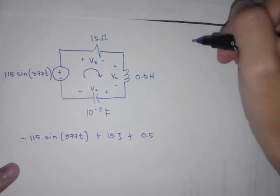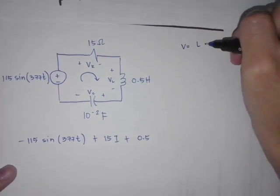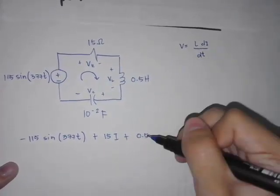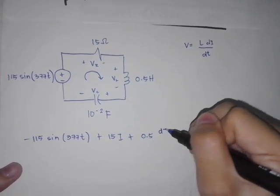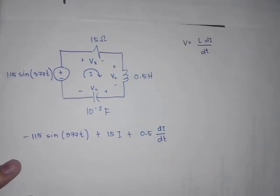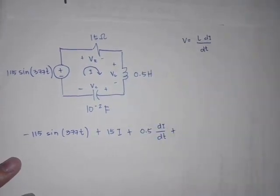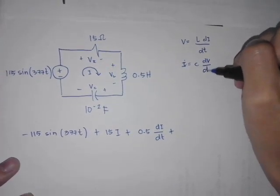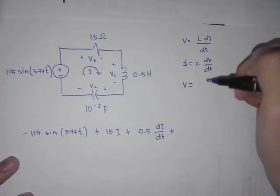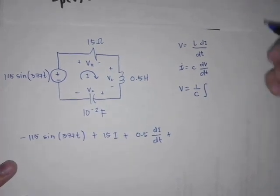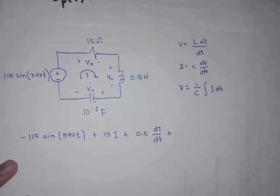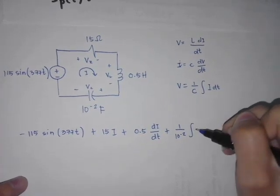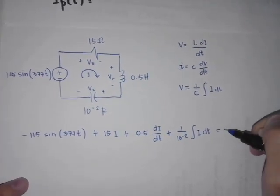For the inductor, V is equal to L times dI/dt. So we have 0.5 times dI/dt. For the capacitor, the voltage is equal to 1 over the capacitance times the integral of I dt. So we have 1 over C, which is 10 to the negative 2, times the integral of I dt, all equal to 0.